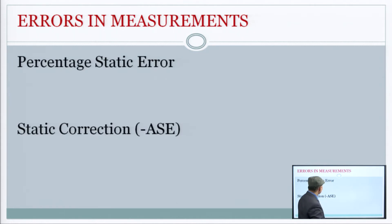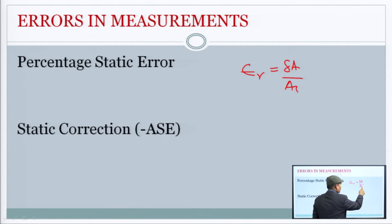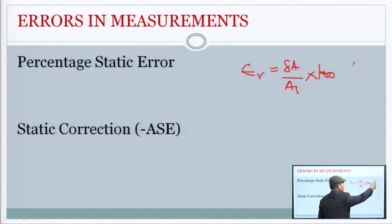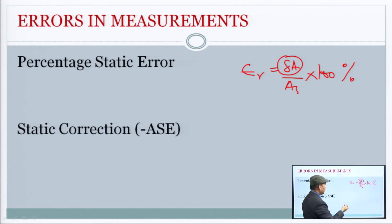Percentage static error — relative error को percentage relative error भी कहते हैं। जो ΔA/A_s मिला है उसको 100 से multiply करने पर percentage relative error मिलता है। अगर fraction की form में चाहिए तो 100 से multiply नहीं करते, लेकिन percentage के terms में चाहिए तो multiply करते हैं।